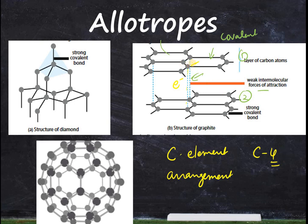In graphite, each carbon is bonded to only three neighboring carbons, so if you focus on one carbon, it is surrounded by three others. That leaves one electron per carbon that is still mobile and can move within the layers. That is why graphite is a good conductor of electricity. I hope this is clear — if you liked this video, share it with your friends, and thanks for watching.